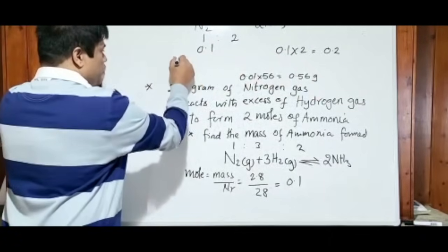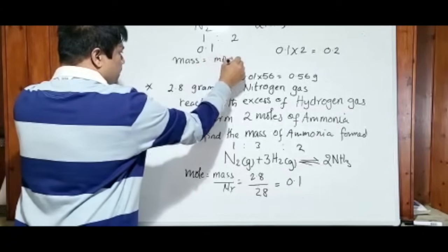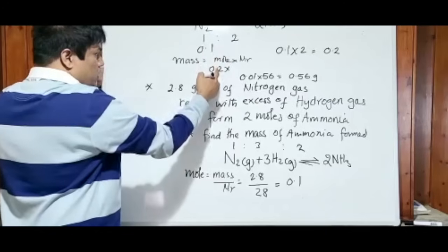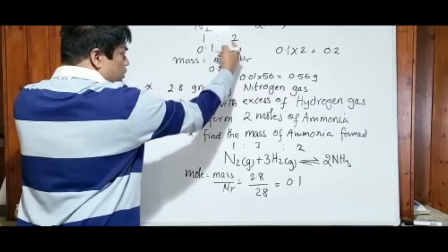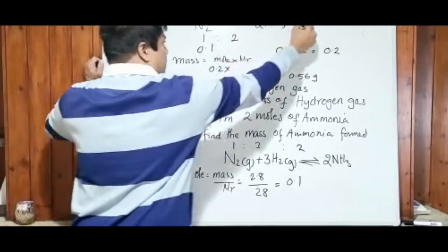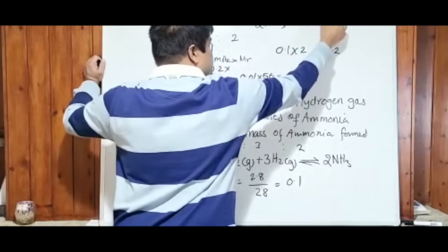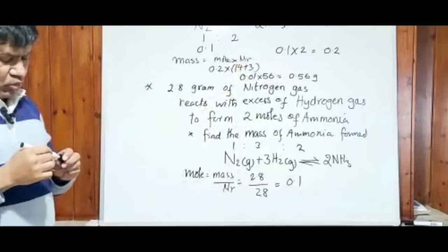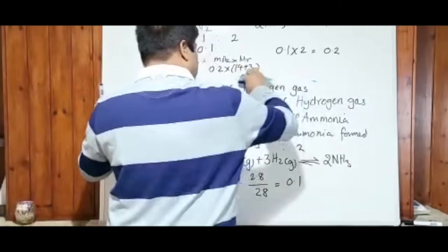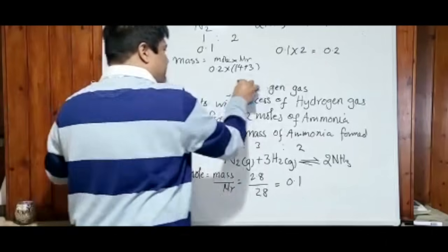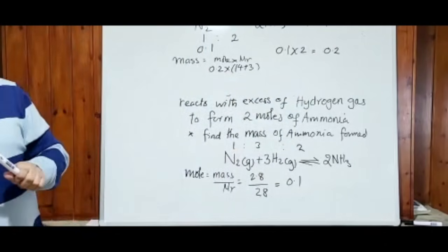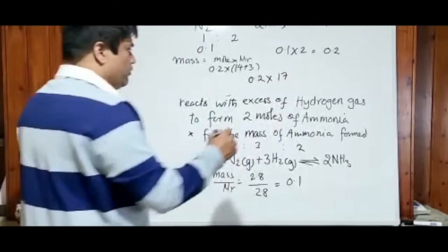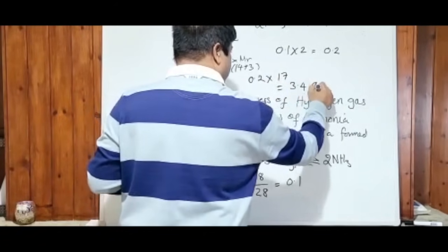0.2 moles is the actual moles of ammonia. We use that mole to work out the mass. Mass of ammonia = mole × Mr. Mole is 0.2. The Mr of ammonia (NH3): nitrogen is 14, hydrogen is 1, so 14 + 3 = 17. Mass = 0.2 × 17 = 3.4 grams.